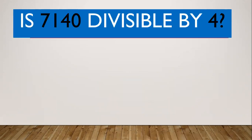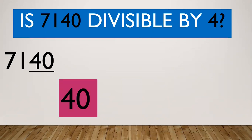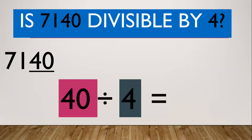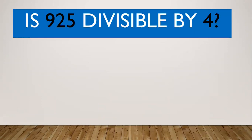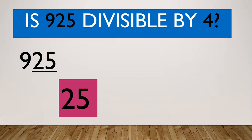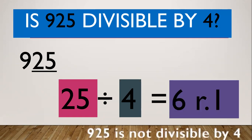Another one. Is 7,140 divisible by 4? The last two digits formed is 40. 40 divided by 4 equals 10. So therefore, 7,140 is divisible by 4. Another one. Is 925 divisible by 4? The last two digits formed is 25. 25 divided by 4 gives 6 remainder 1. So we have a remainder, which means 925 is not divisible by 4, because the last two digits formed is not divisible by 4.